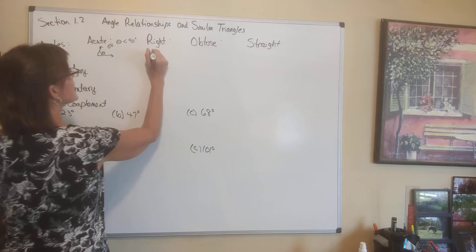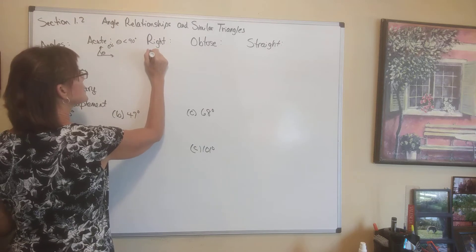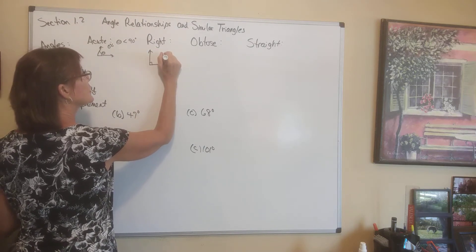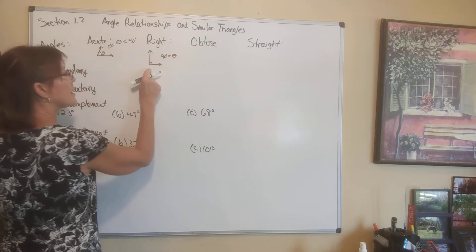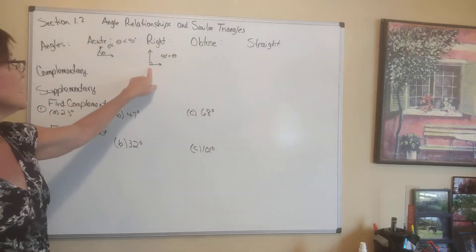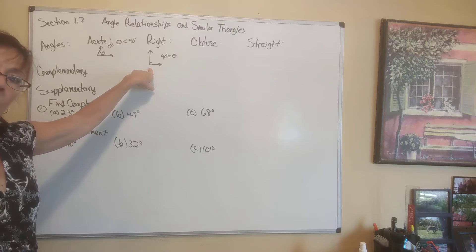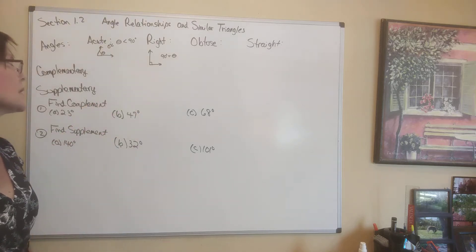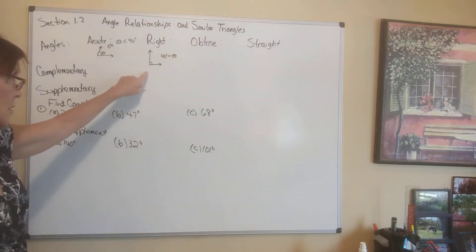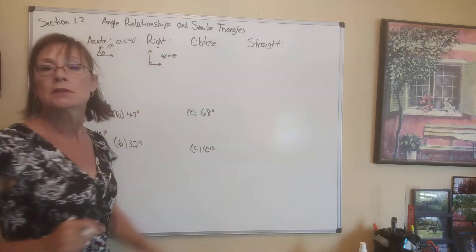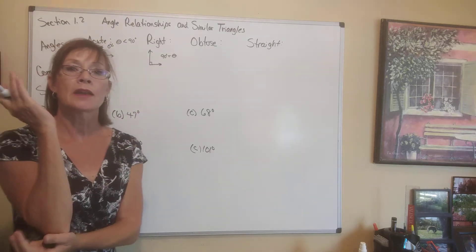An angle that is 90 degrees is a right angle. I'm sure you are familiar with that. Right angles are often indicated by a little box at the vertex where they meet. Perpendicular lines meet at right angles.